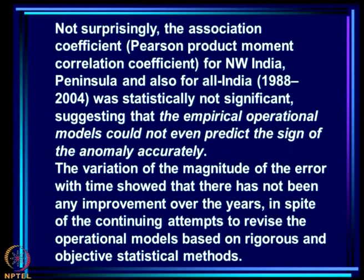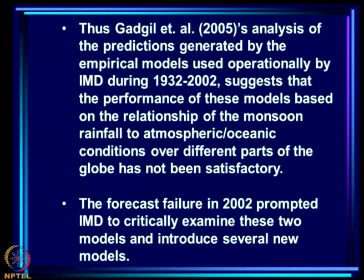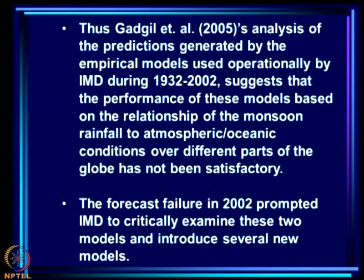The variation of the magnitude of the error with time showed that there has been no improvement over the years despite continuing attempts to revise operational models based on rigorous and objective statistical methods. Thus, Gargill et al.'s analysis of predictions generated by empirical models used operationally from 1932 to 2002 suggests that the performance of these models based on relationships of monsoon rainfall to atmospheric and oceanic conditions over different parts of the globe has not been satisfactory. The forecast failure in 2002 prompted IMD to critically examine these models and introduce several new models.